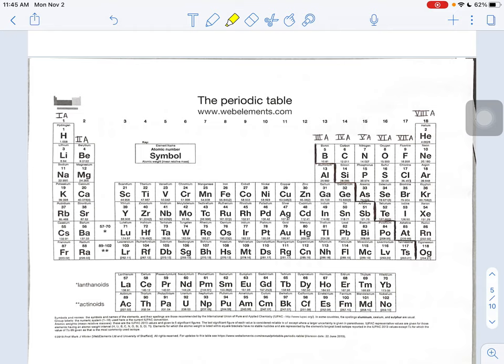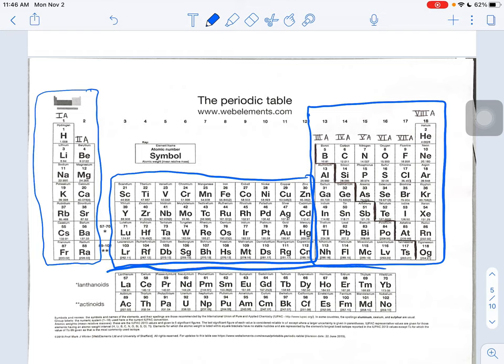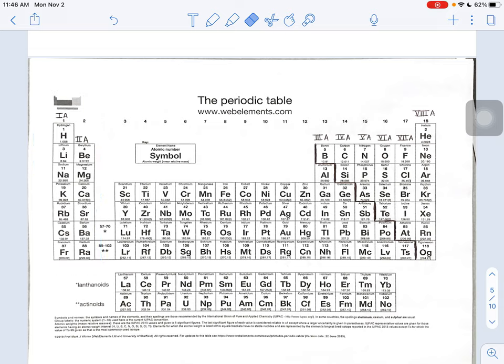Do you see how the far left-hand side of the periodic table has two very tall columns? Then the right-hand side of the periodic table has six tall columns. Then those little shorty columns in the middle, this is 10 blocks wide. And then if you count how wide these guys are at the bottom, those are 14 blocks wide. That is not an accident. That is not a coincidence.